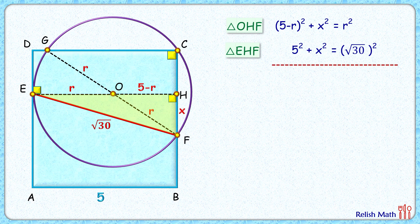LHS will get (5-r)² - 5². RHS will get r² - (√30)². Applying (a-b)² identity and opening this, LHS will be this and RHS will be r² - 30.